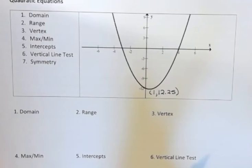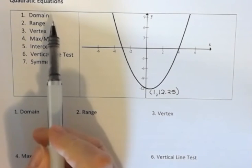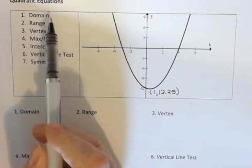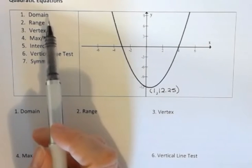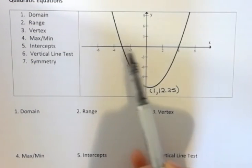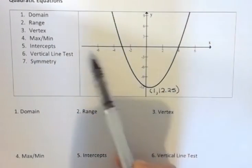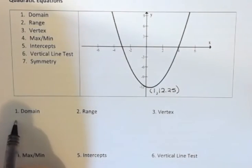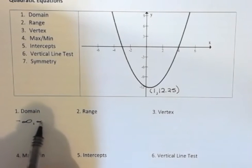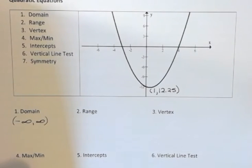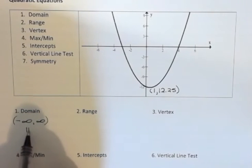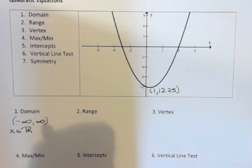The domain is asking what are all the possible x values that we can have for this function. x can be anything. We can go out here and it's going to go way up high, so x can be all real numbers. One way to write that is to say I have a range from negative infinity to positive infinity. Another thing is you can say x is an element of the real numbers, so there's more than one way to write that, but know that any x - there's no restrictions on the x.